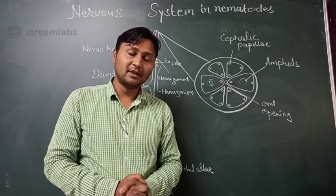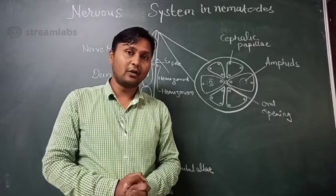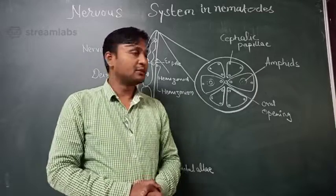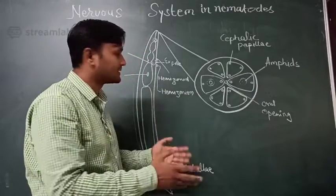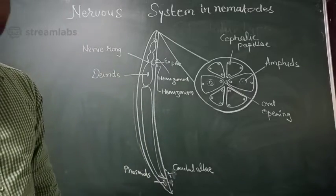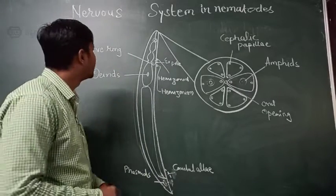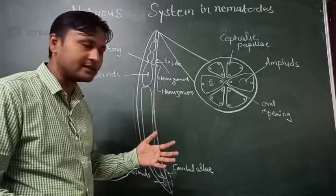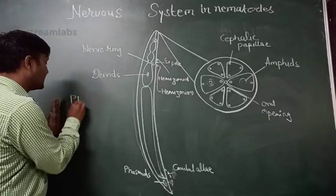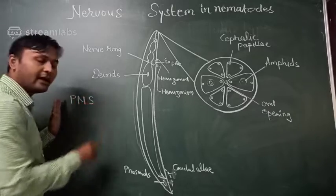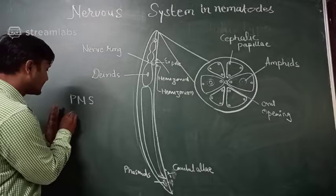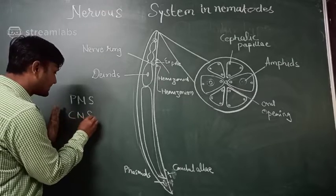To understand the excitatory system, we are talking about the nervous system of plant parasitic nematodes. The nervous system is divided into two types: the peripheral nervous system, that is PNS, and the central nervous system, that is called CNS.